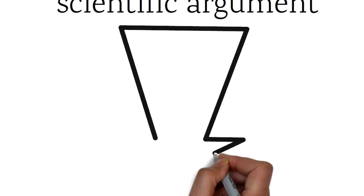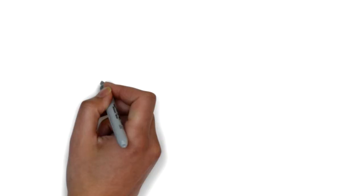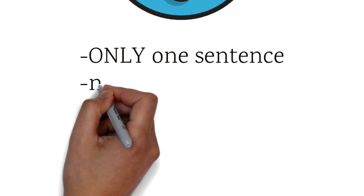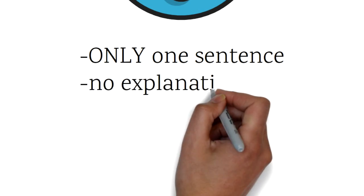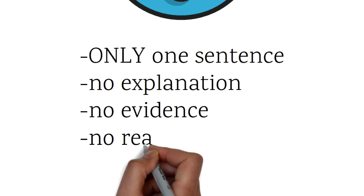Now let's dig into these three parts a little deeper. A claim is a statement that answers the question. It will usually only be one sentence in length. The claim does not include any explanation, any reasoning, or any evidence, so it should not include any transition words such as because.